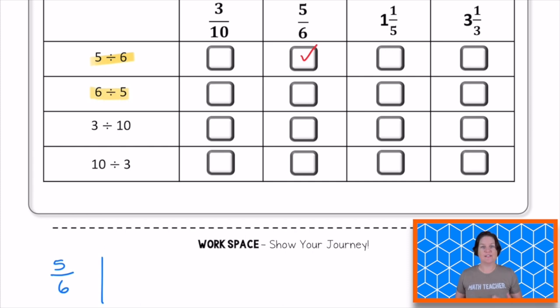Let's try the next one. We've got 6 divided by 5. Well, as a fraction, we can write that as 6 divided by 5, or 6 fifths. Now, I don't see an answer that says 6 fifths, but I do see an answer that says 1 and 1 fifth.